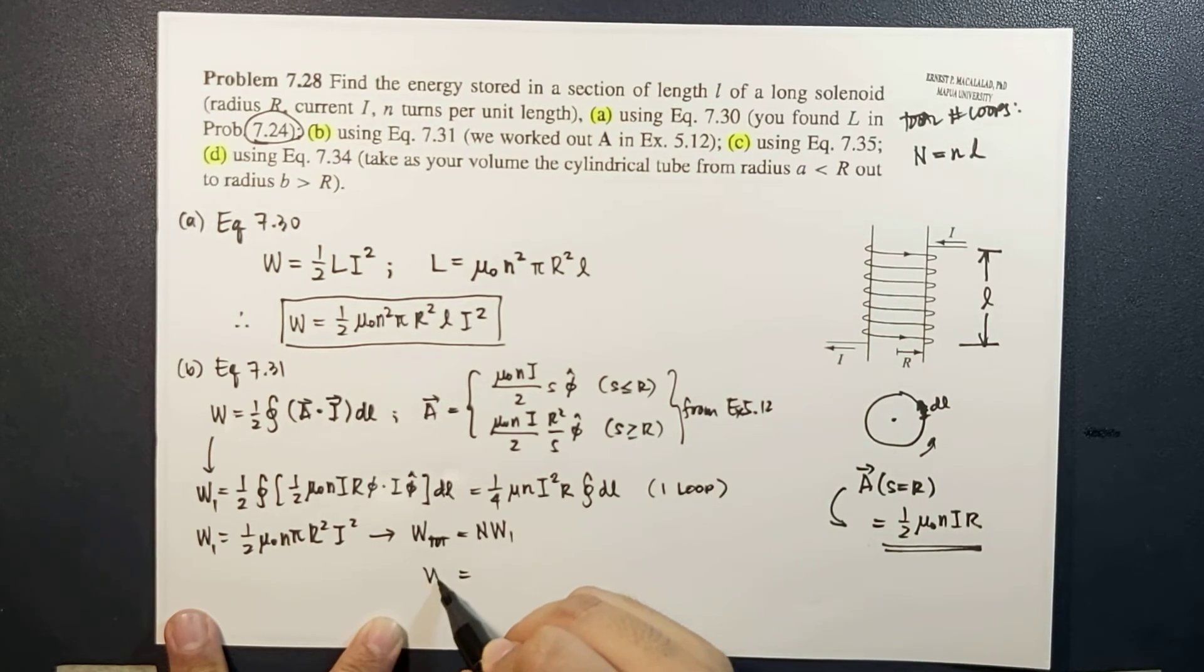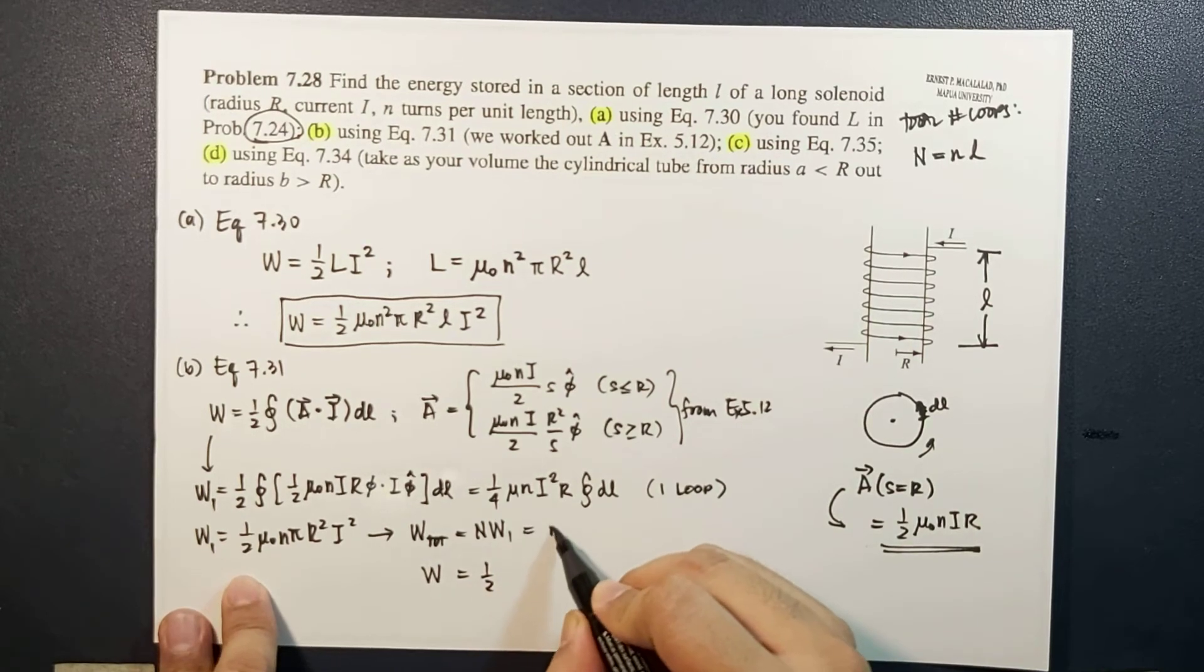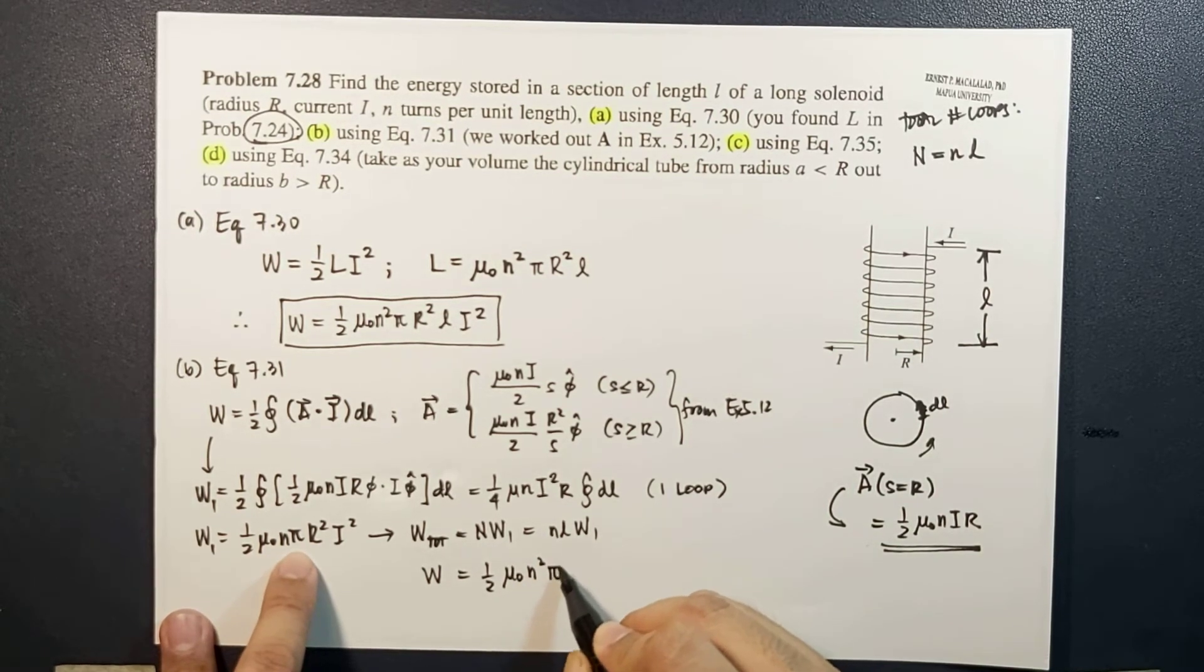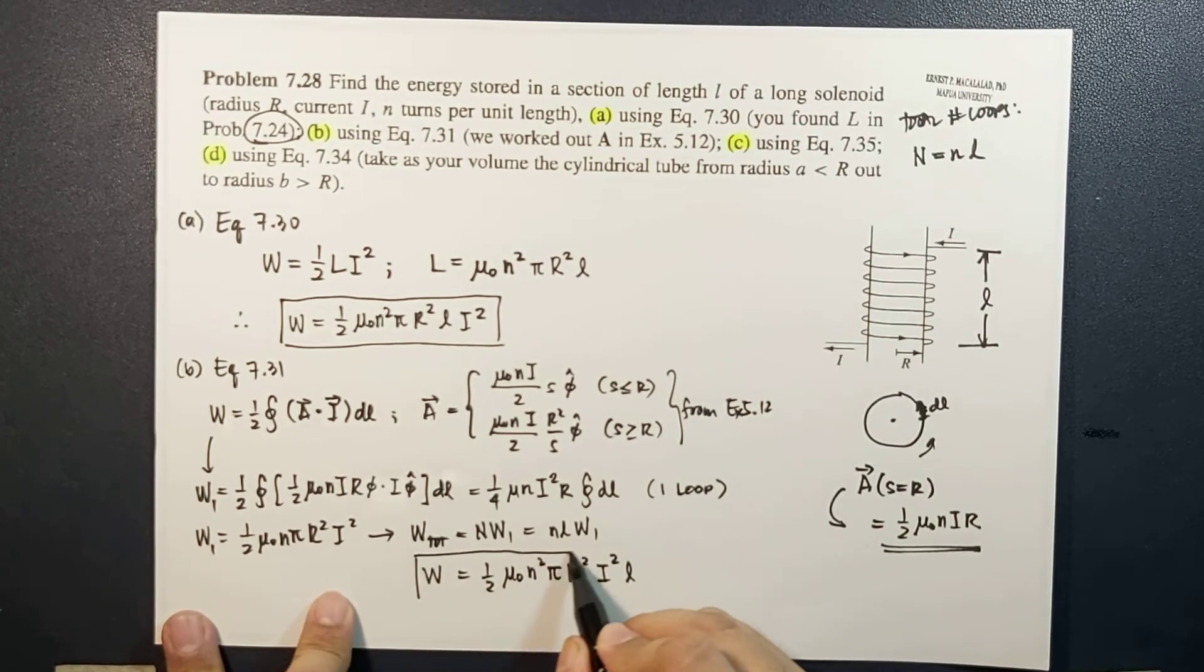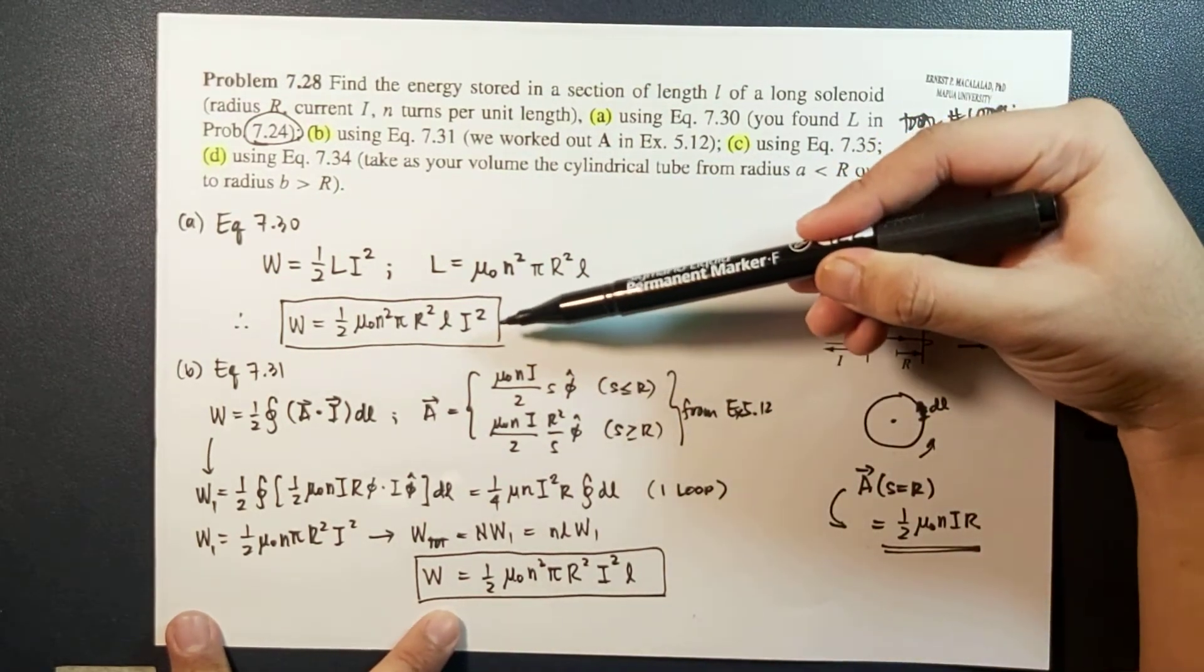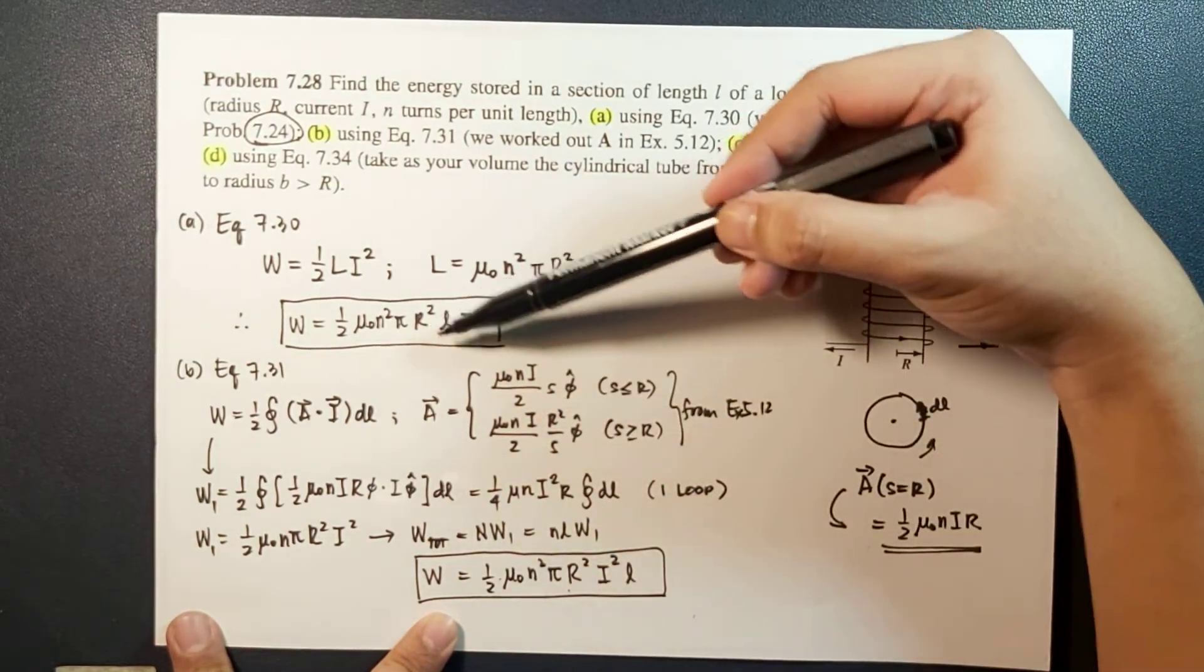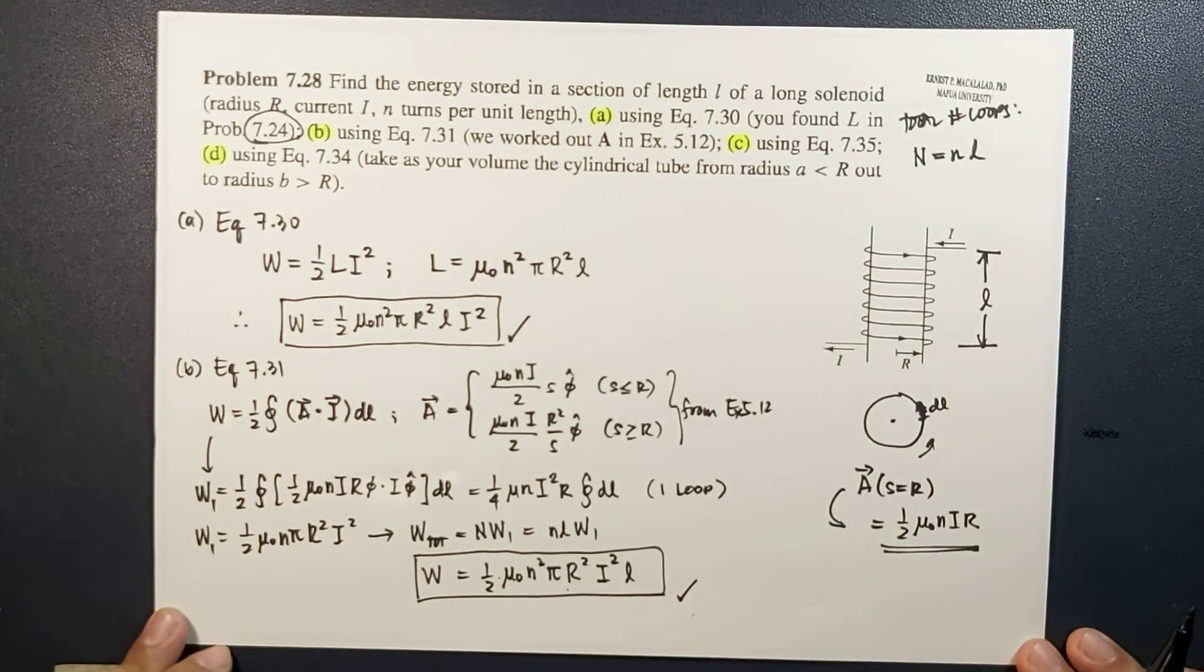This is now equal to one half times μ₀n²πr²li², which is the same as this expression. You can see that's one half μ₀n²πr²li². This is the same as the first result.